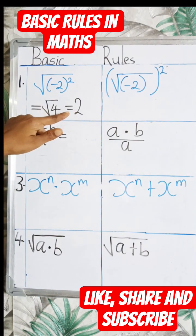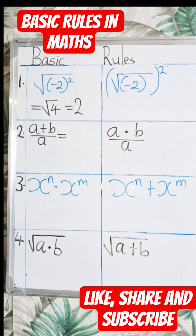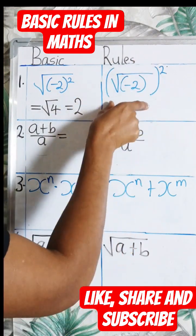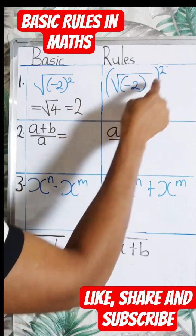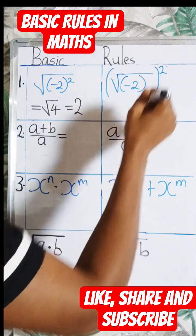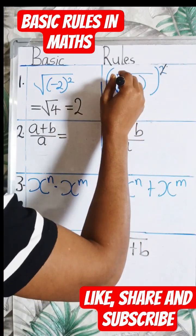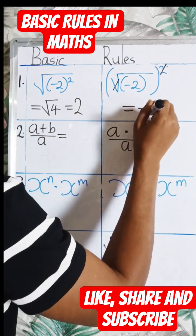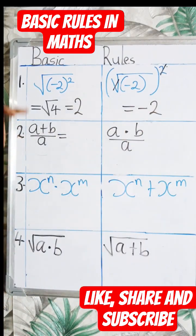So this expression gives us plus 2. Now let's look at this one. Here, it is enclosed in a bracket and raised to power 2. This 2 and the root will cancel out and we are left with minus 2. You can see the answers are not the same.